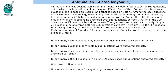This problem says that Mr. Pranav was seeking admission in a medical college. He wrote a paper of 100 questions. Each question was either easy or difficult, and each of these 100 questions had two parts: one based on zoology and the other based on botany. Certain conditions are given about how many questions he answered correctly or incorrectly, and the marking scheme as well.